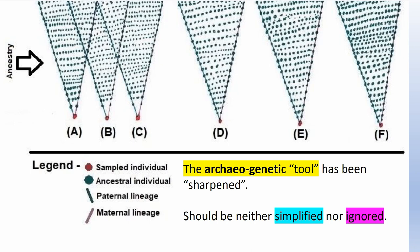This diagram illustrates autosomal genetics — it's a bit crude but does the job. Previously, you could only really look at one single lineage: mother, mother, mother on that maternal line, or, if you had good preservation, the father's line. But now you can look at the whole genome — all of the ancestry — and that's given a whole lot of profound findings. This tool has been sharpened. To simplify it would be a tragedy, but to ignore it would also be a tragedy.